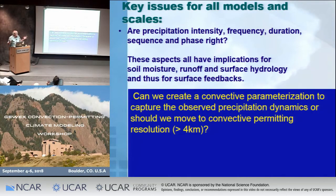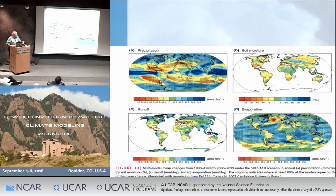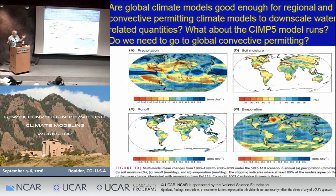We don't have computers that can run global models for 100 years at convective permitting scales. Right now we're at 50 to 100 kilometers and need to use convective parameterizations. The question I've been wrestling with the last ten years is: can we develop a convective parameterization to get the right intensity frequency? And if not, is there a way to do this with statistical or hybrid downscaling, or do we need full dynamical downscaling?